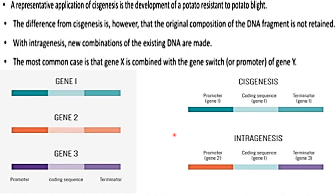In recent trends in plant breeding, there are two types: cisgenesis and intragenesis. In cisgenesis, both the promoter and terminator are from the same species and the gene is transformed. In intragenesis, the promoter and terminator are from two different species, and even the gene used for protein expression is from a different species. One example of cisgenesis application is the development of potato resistance to potato blight disease.